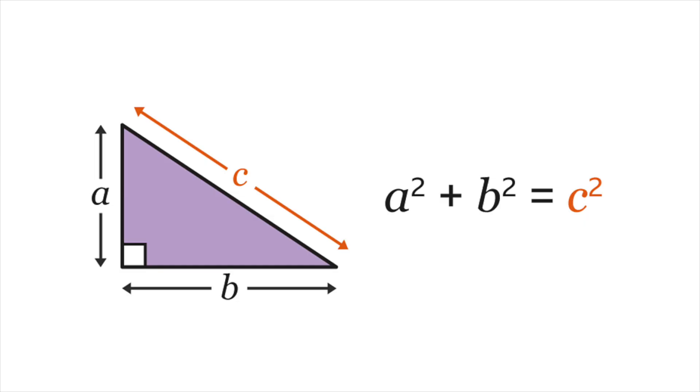Now obviously if you think about Pythagoras, when n equals 2 it holds for many cases, but when you go above n equals 2 — so n equals 3, 4, 5, up to 1000, up to infinity, whatever you like — there are no numbers that satisfy this formula.